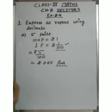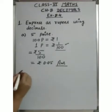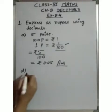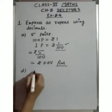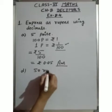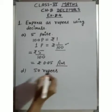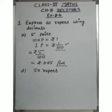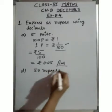B and C parts are the same method. Now we will do D part of this question. D part is: 50 rupees 90 paise.